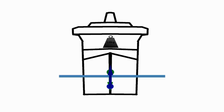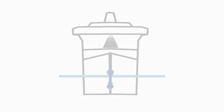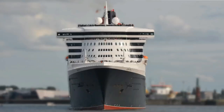Everything stays in line, the ship stays upright. And that brings us to the end of this video — we've had a quick look at why ships float, and we've looked at the center of gravity and center of buoyancy and how they work together to keep the ship upright.